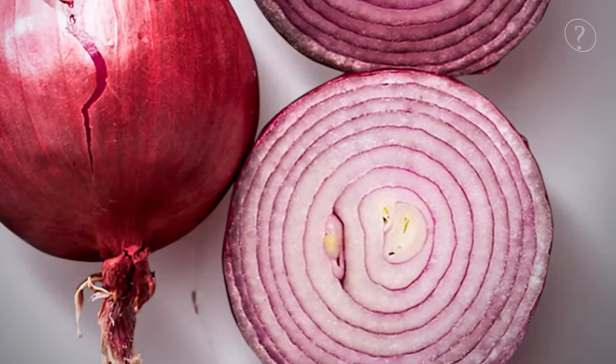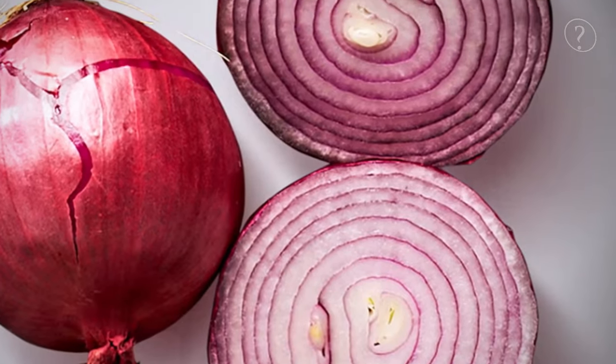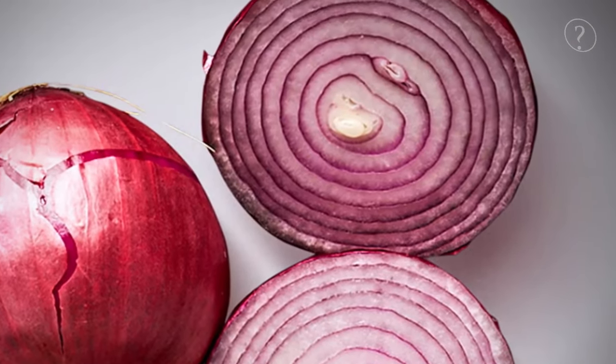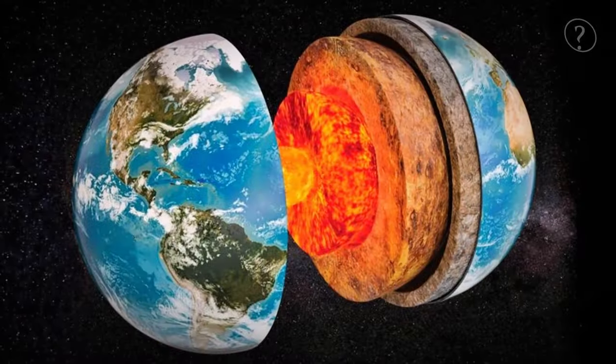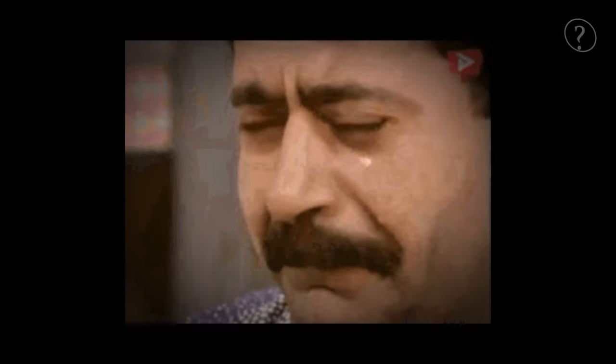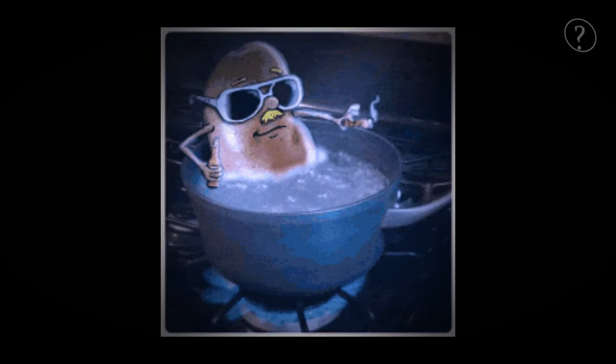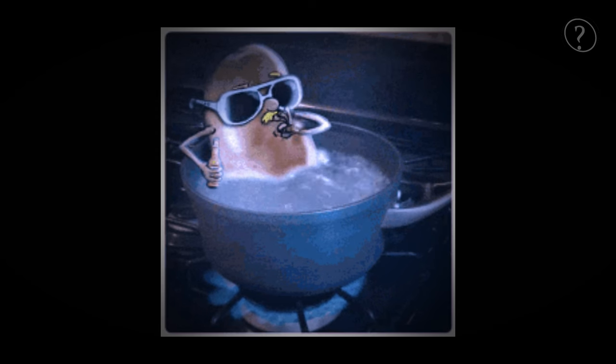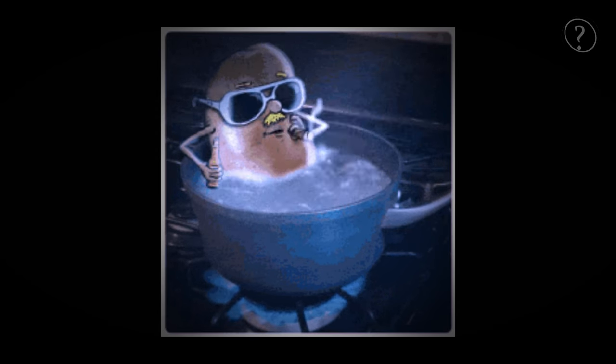Earth is kind of like an onion. Just like how an onion has layers you can peel away, the earth is built with distinct layers stacked on top of each other. But here's the twist: while an onion can make your eyes water, Earth's layers turn up the heat to jaw-dropping extremes. Let's peel back this planetary onion.